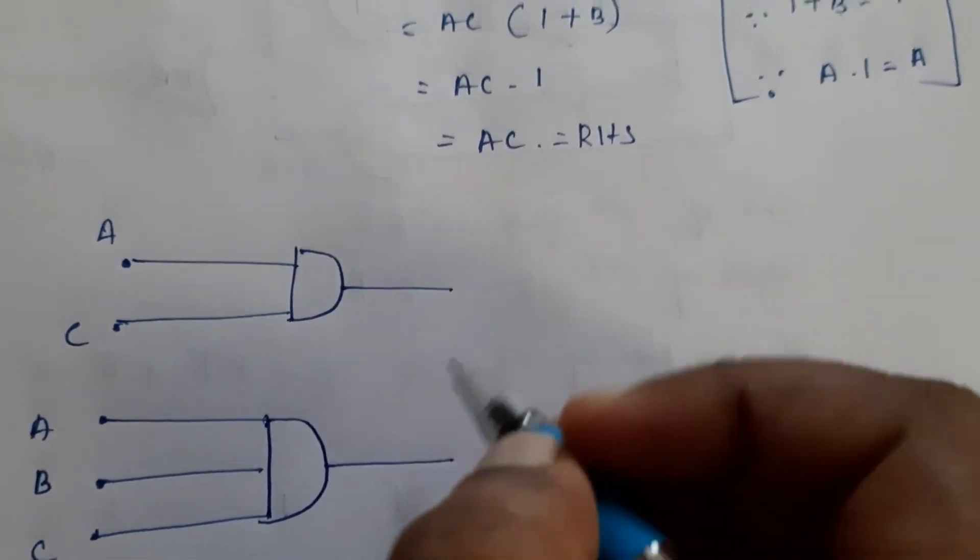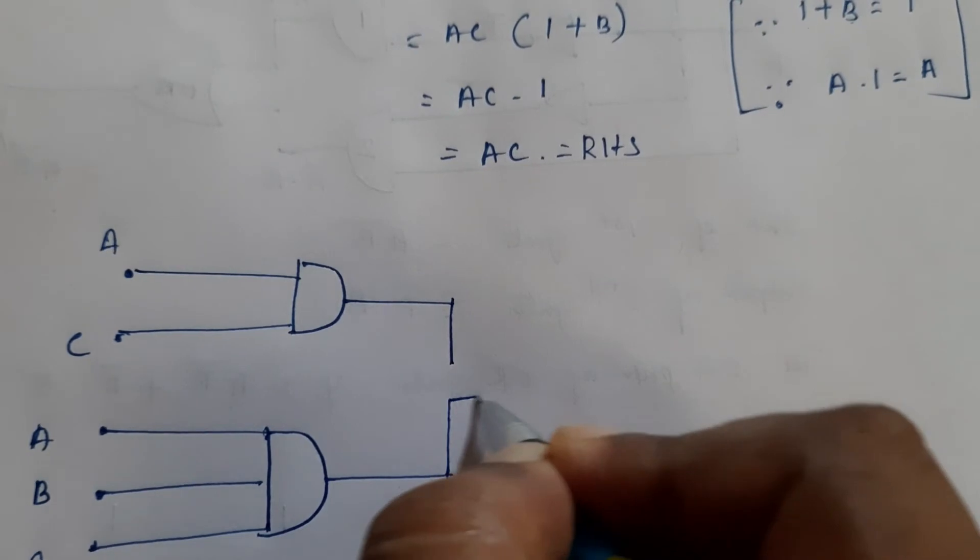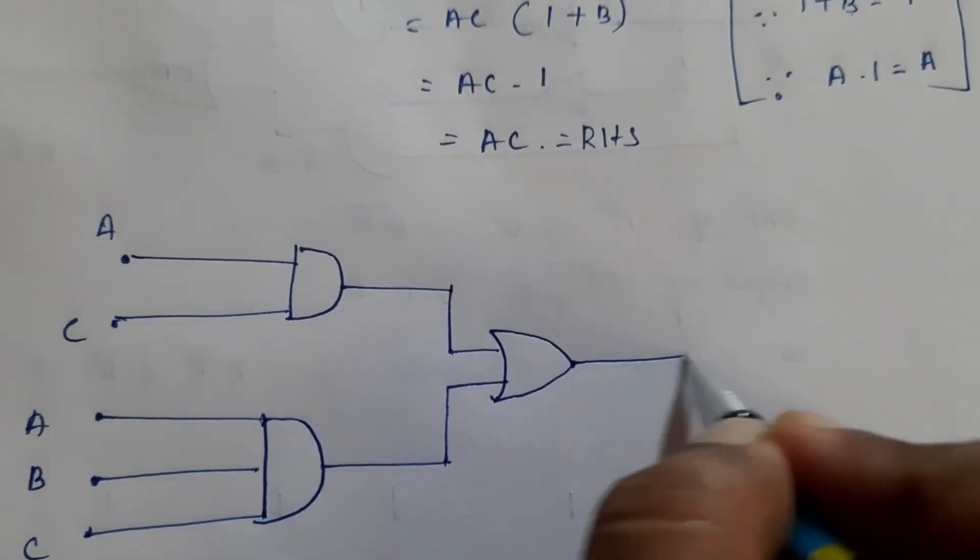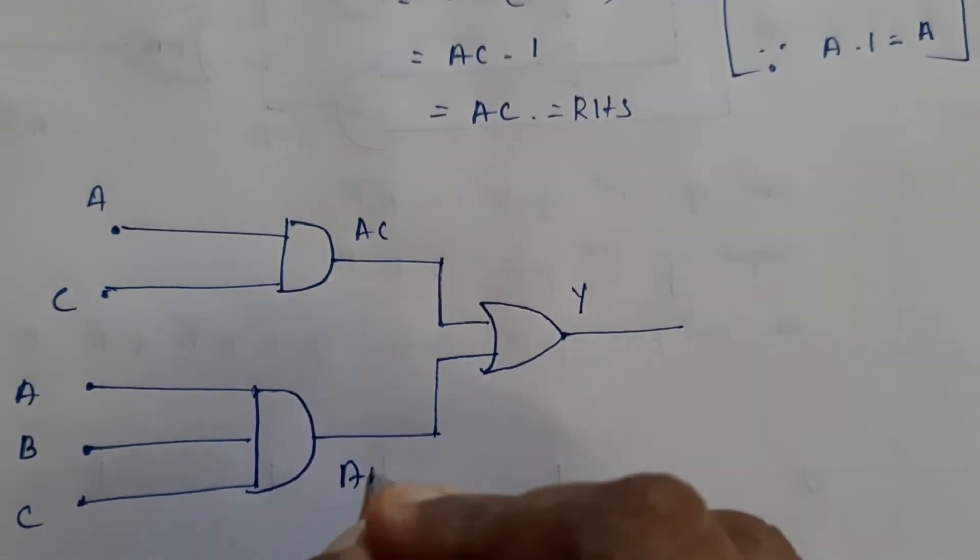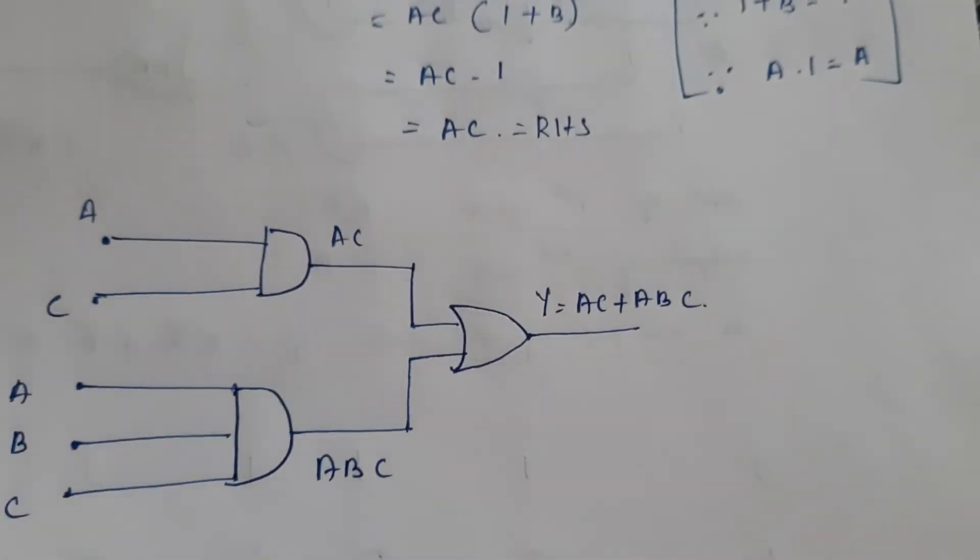Now the outputs of these two gates are ORed. So what do you have to draw here? You have to draw an OR gate. So what you are getting here? This is AC. This is ABC. This is AC + ABC. This is for the left hand side.